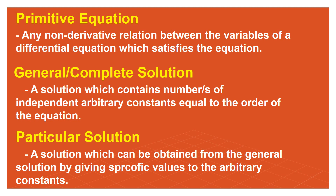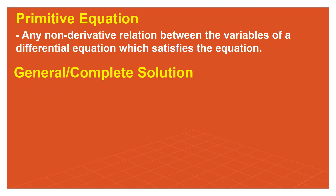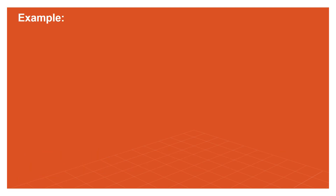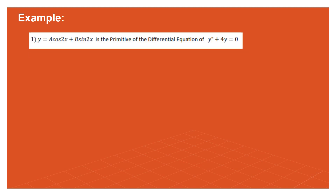Everything will be explained further when we solve the problems. Example number one: y = a·cos(2x) + b·sin(2x). This is called the primitive of the differential equation y'' + 4y = 0. The given problem is the primitive, and the differential equation will be derived from it.